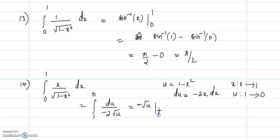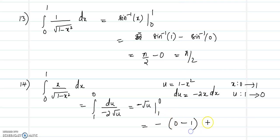The integral of 1/(2√u) equals √u, and we have a minus sign. Applying the limit from 1 to 0, we get minus (√0 - √1) = minus(0 - 1). The value of the integral will be equal to 1.